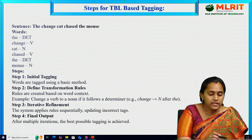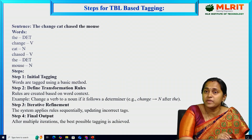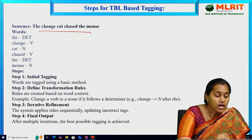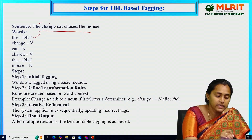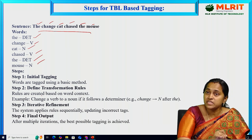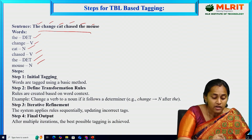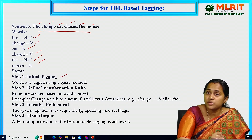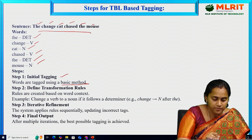Now let's see an example — the step-by-step procedure for TBL-based learning. Taking the sentence: 'change can, change is the mouse.' Here, 'that' is a determiner, 'change' is a verb, 'can' is a noun, 'change' is a verb, 'that' is a determiner, and 'mouse' is a noun. The first step is to initialize the tagging by using the basic method and applying the defined transformation rules.